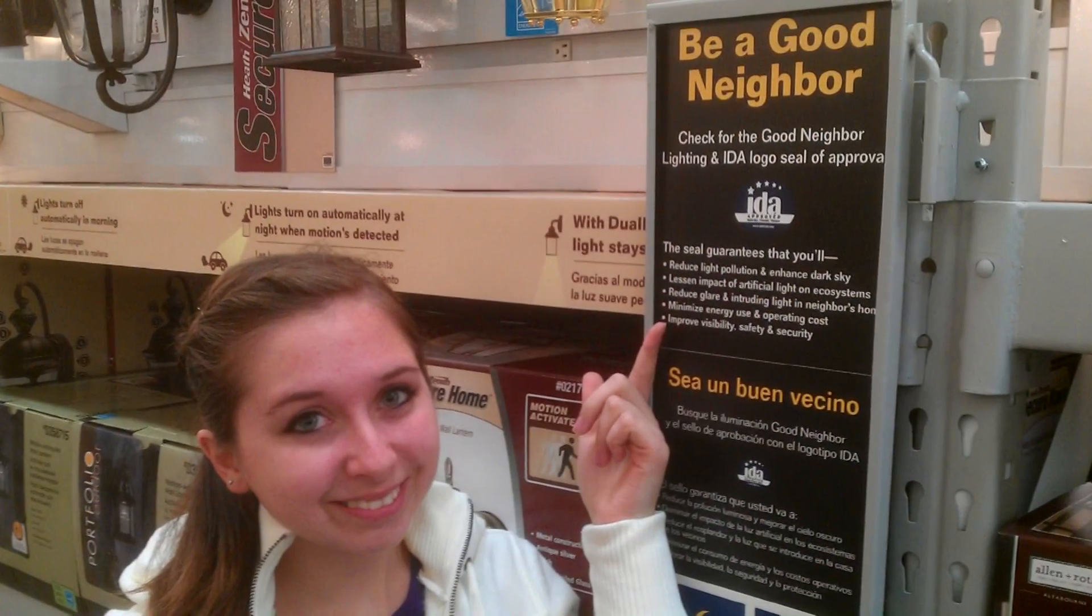And now this week's dark sky fact. Full cut off light fixtures are easy to install, eliminate dangerous glare, and light up what needs to be lit, the ground. Consider changing old, poorly shielded fixtures to modern shielded ones. You can find dark sky approved fixtures at Lowe's home improvement stores.